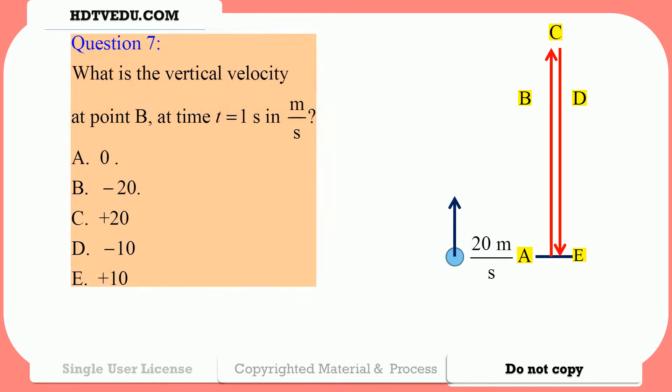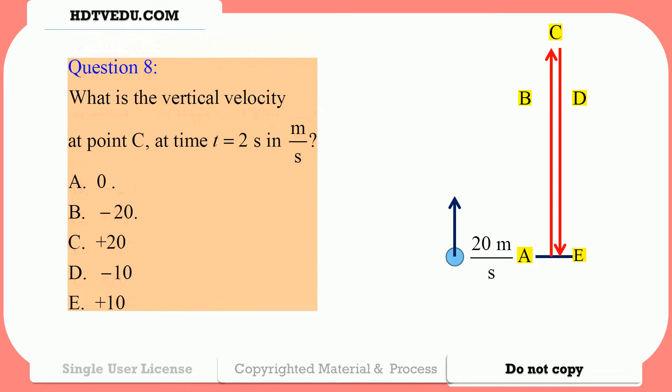Question number 7: What is the vertical velocity at point B at time t equals 1 second in meters per second? Is it 0, negative 20, positive 20, negative 10, or positive 10? Question number 8: What is the vertical velocity at point C at time t equals 2 seconds in meters per second? 0, negative 20, positive 20, negative 10, or positive 10?